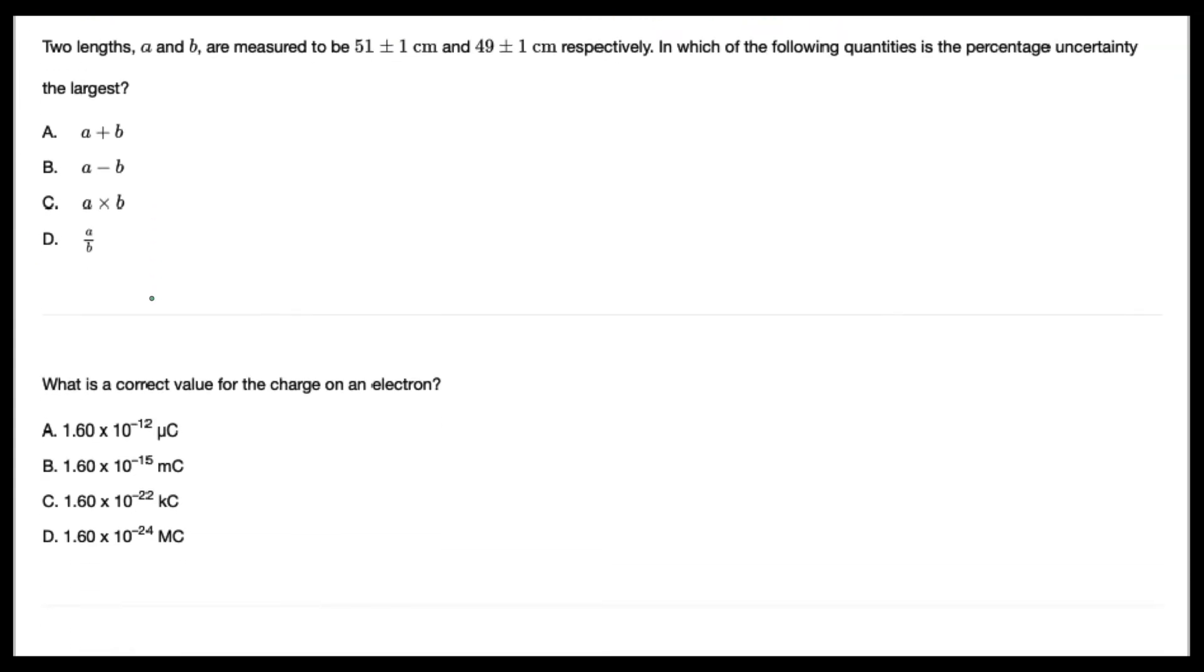Two lengths, A and B, are measured to be 51 ± 1 cm and 49 ± 1 cm respectively. In which of the following quantities is the percentage uncertainty the largest? So this one is a little bit tricky.